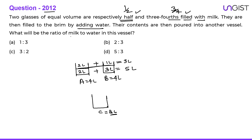The question is: what is the ratio of milk to water in this vessel? So five is to three. And moreover, if we have assumed capacity as four and four, so obviously the total will be eight. The total of five and three is eight. So the correct answer is option D.